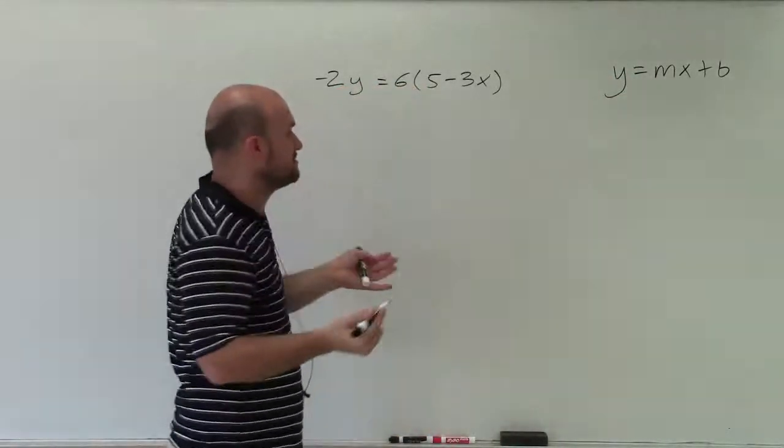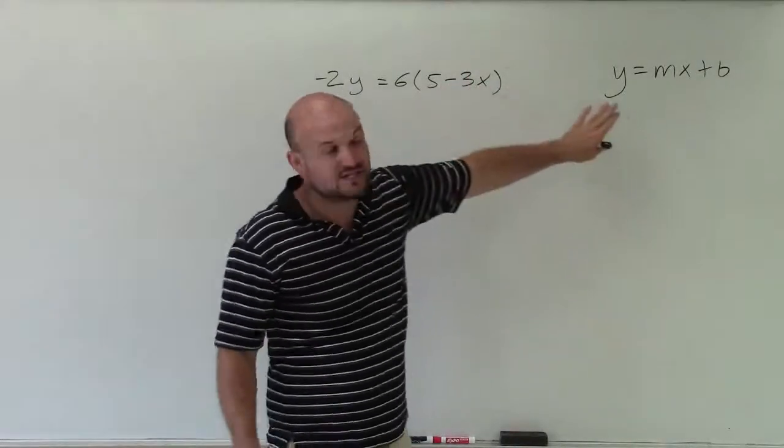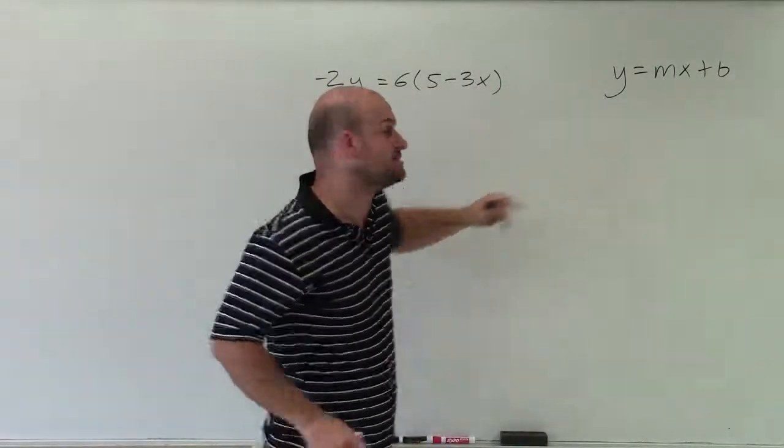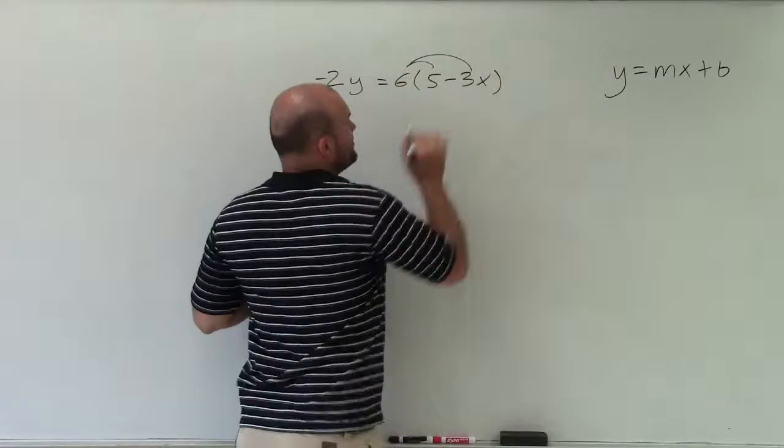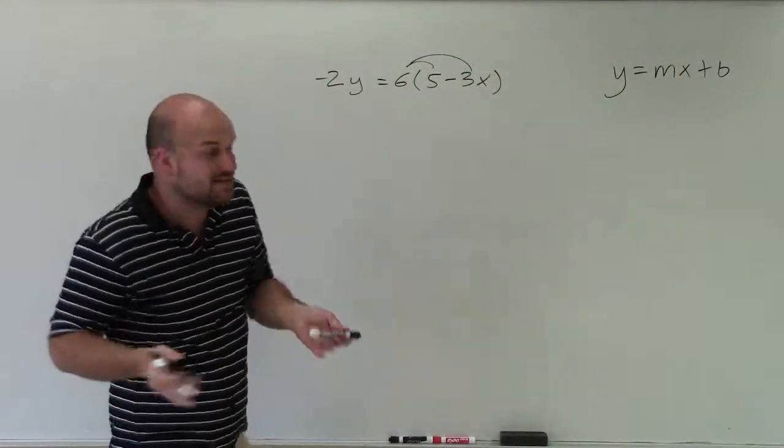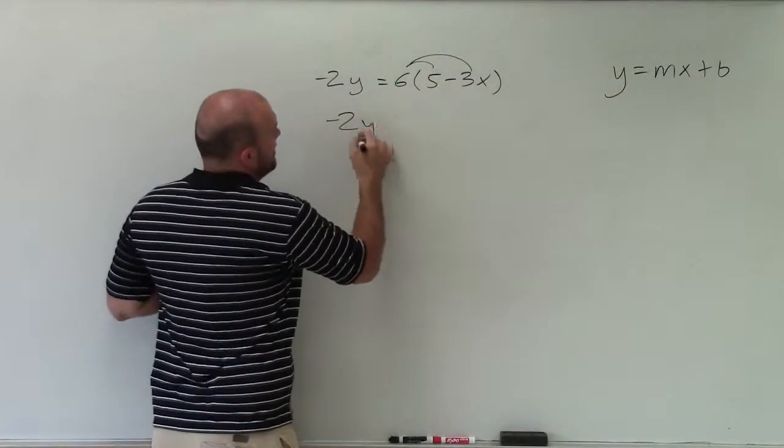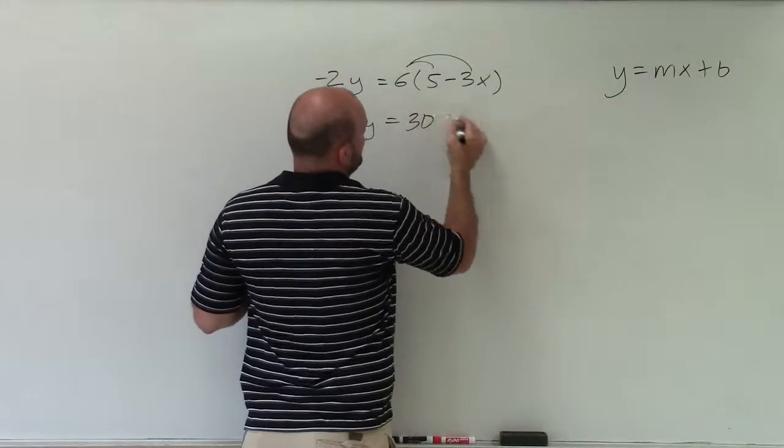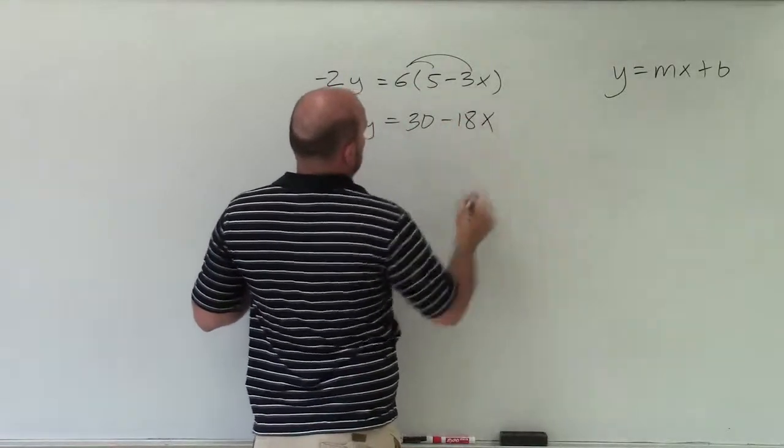So to do that, there's a couple things we're going to do. First of all, you can see we have these parentheses here, which in slope-intercept form I do not have. So I'm going to want to distribute the 6, so therefore I won't have parentheses. So I have negative 2y equals 6 times 5, which is 30, 6 times negative 3 is a negative 18x.